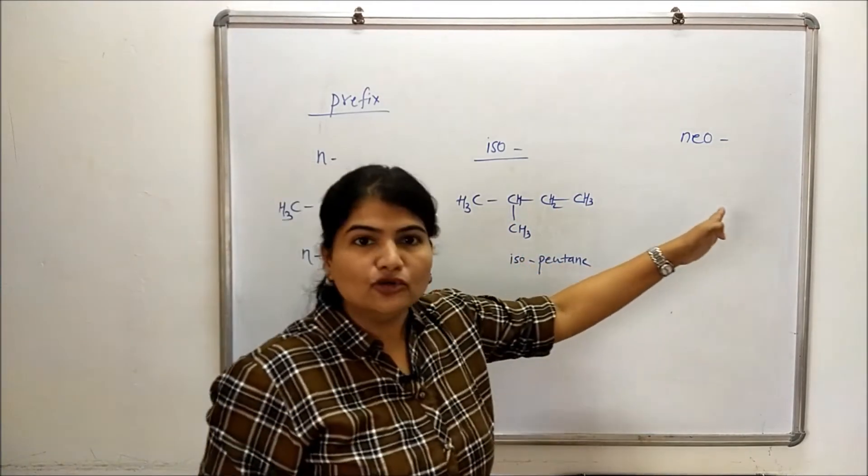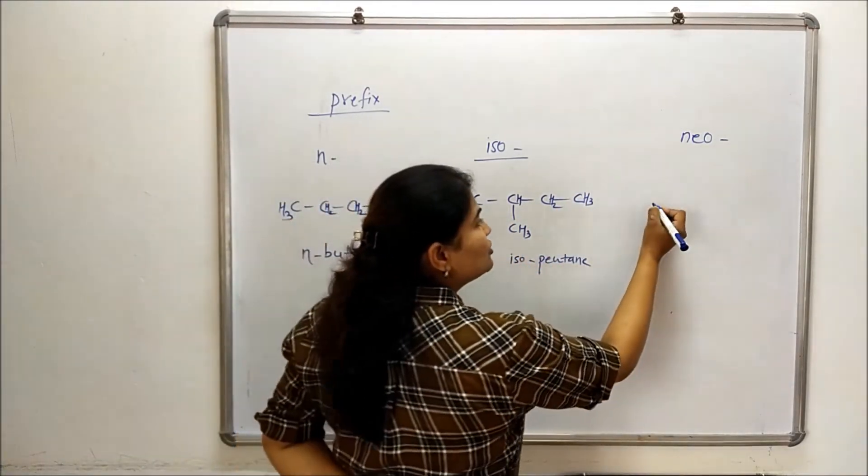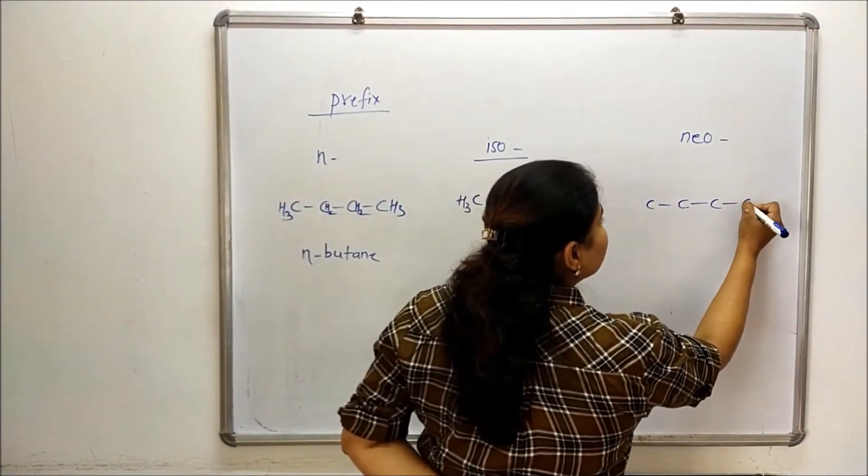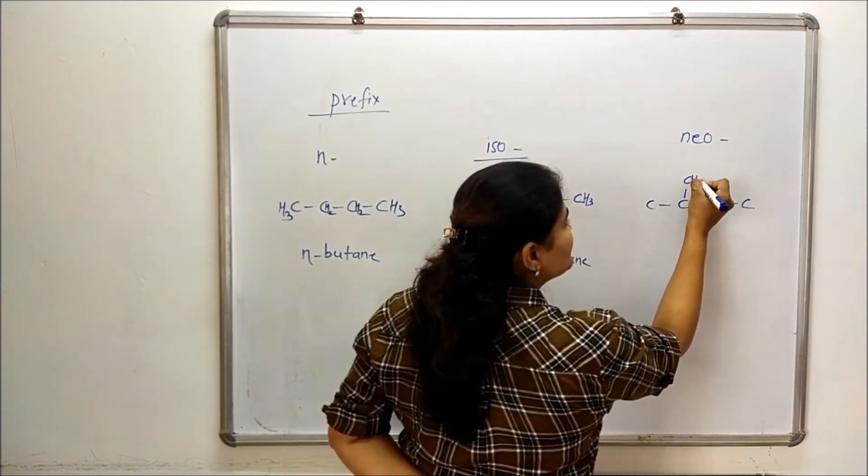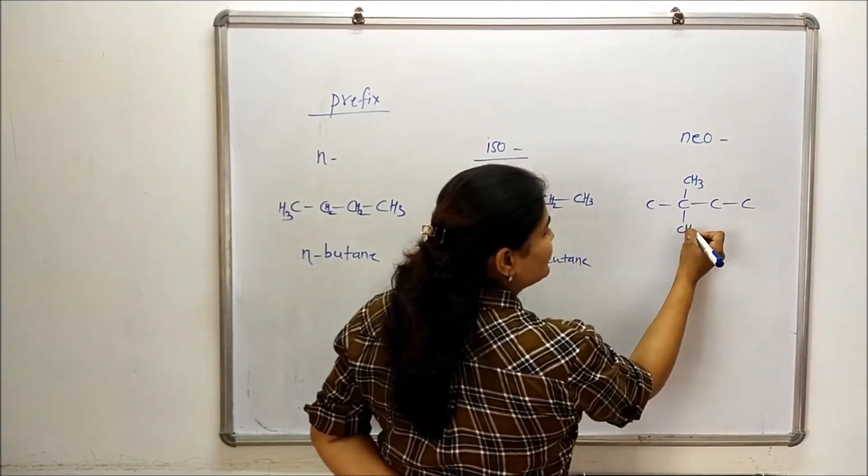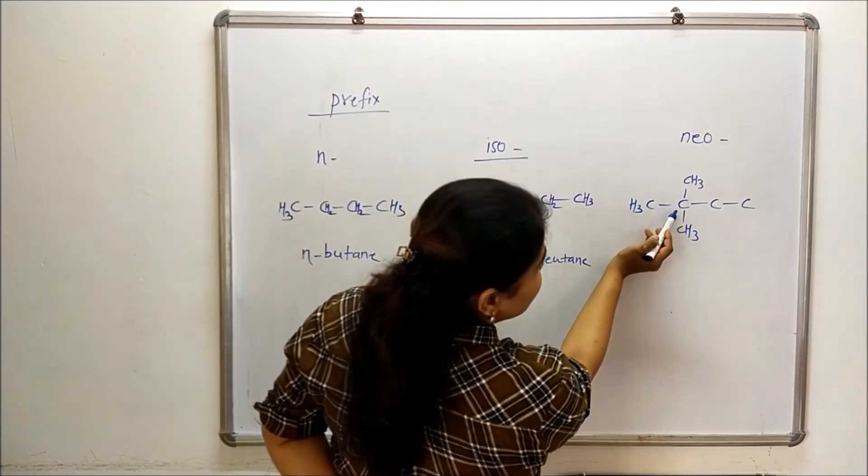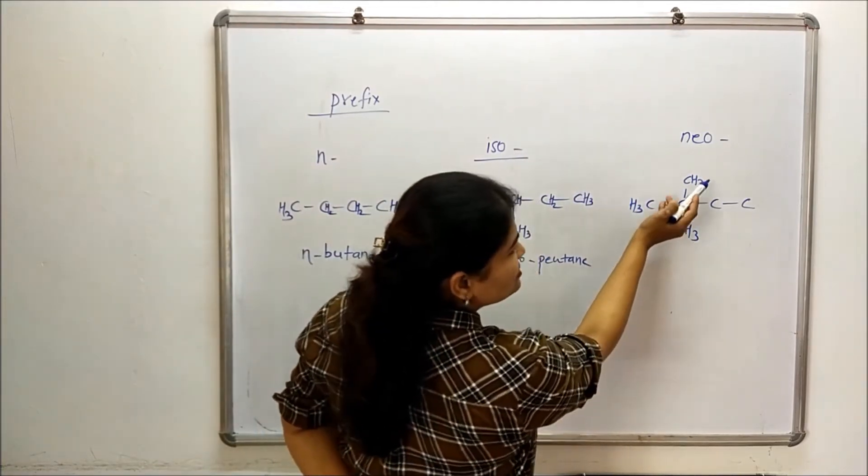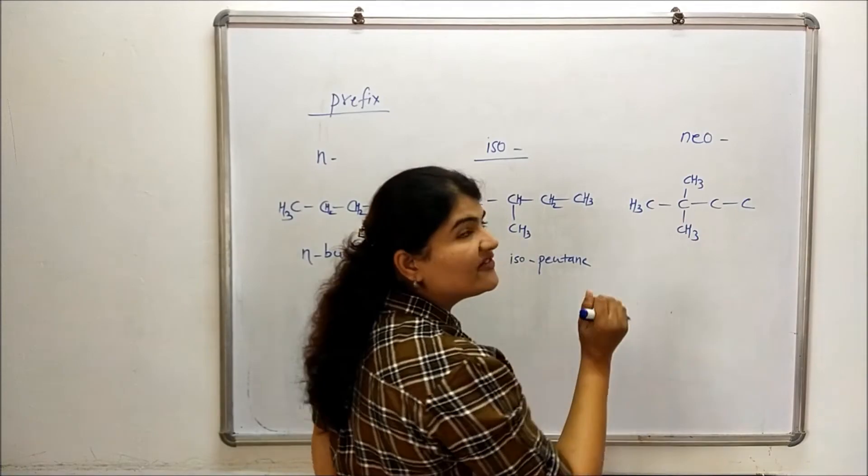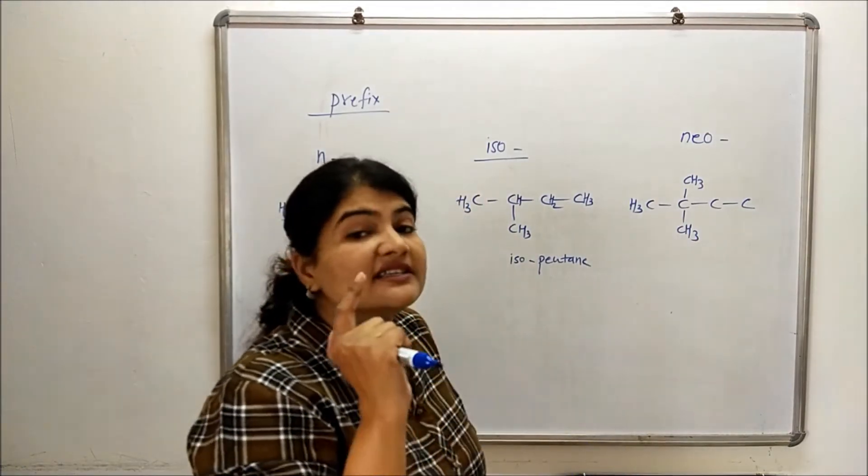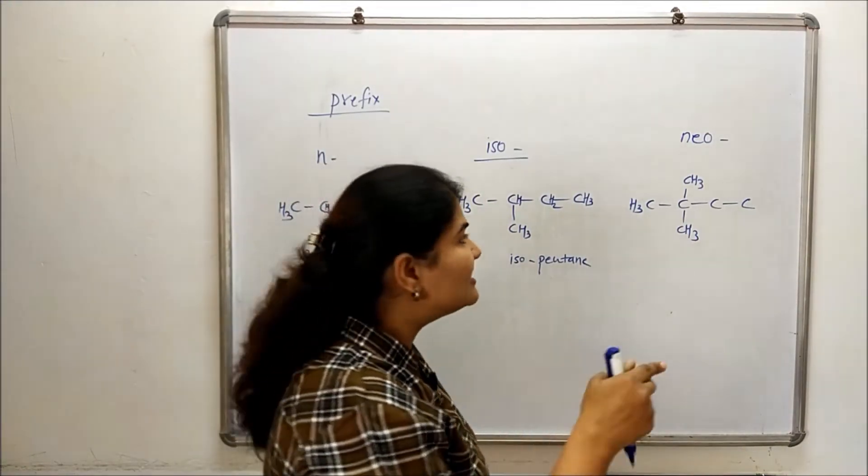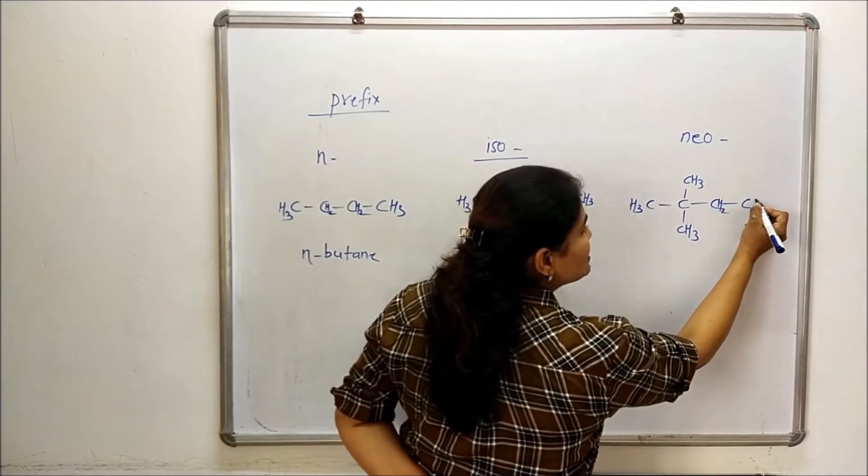When to use neo prefix, neo is the term used where there are two methyl substitutions on the second last carbon. So here CH3, CH3, CH3, CH3. This is going to be an integral part of molecule and no other substitution or branching will be allowed. Then only we can use neo.